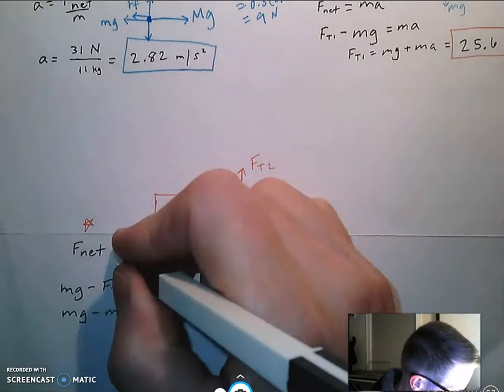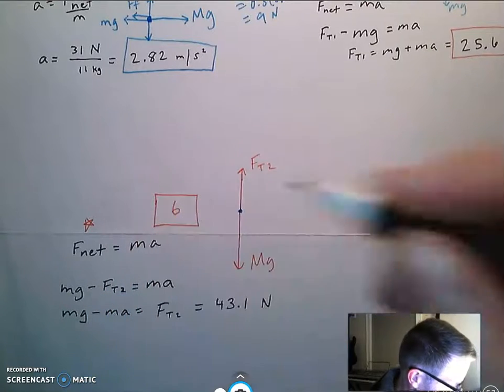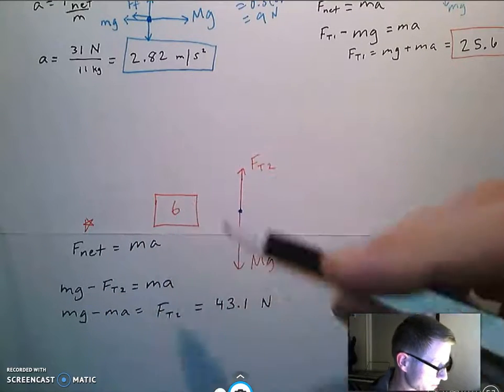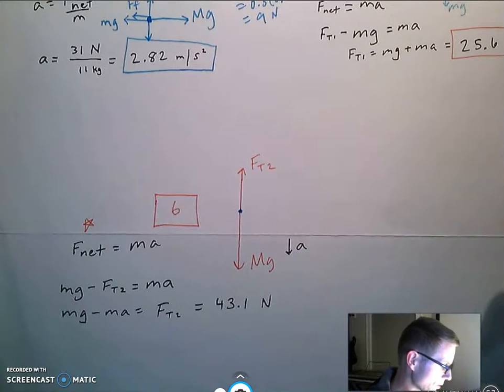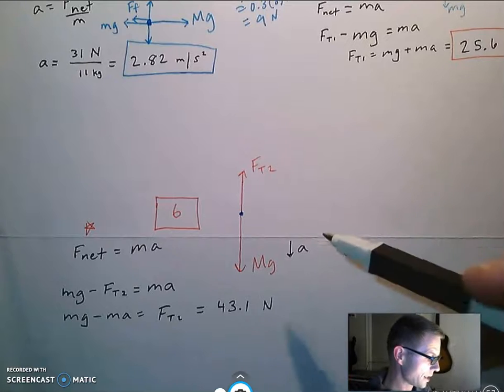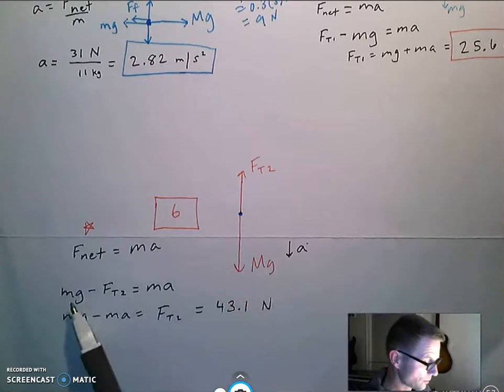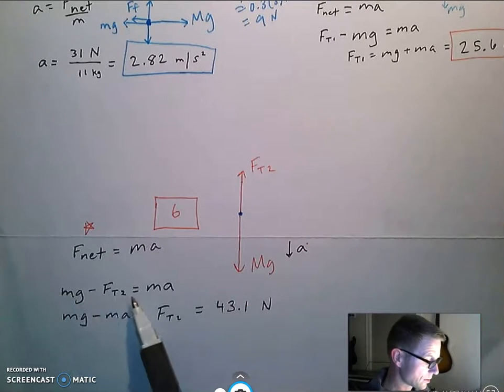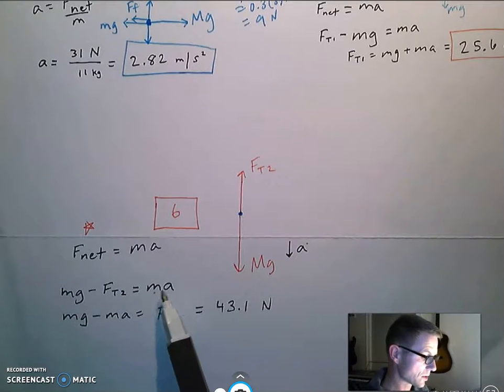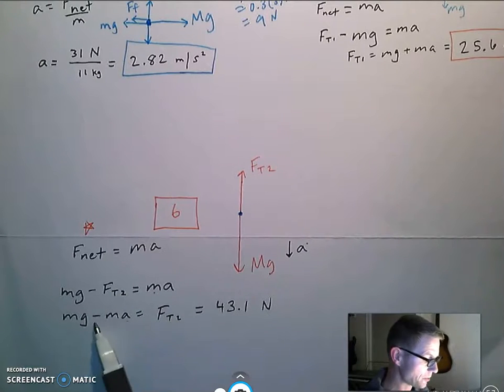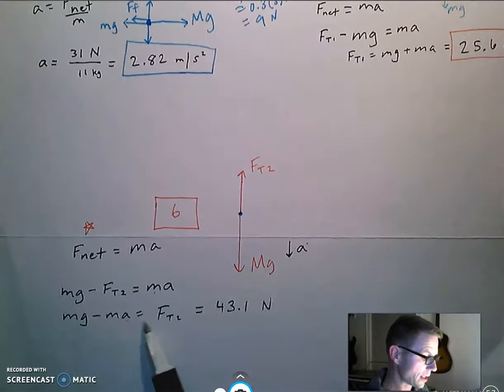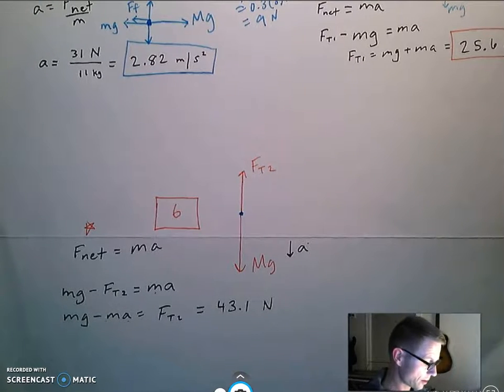The net force is ma. In this case that's 6 kilograms. Now I prefer to make the acceleration going in the direction of my bigger force, in this case it's downward, and I still know that's 2.82. So that mass is 6, that tension is unknown, that mass is 6, that a is 2.82. So if you do a little algebra you add ft to both sides, you subtract ma. So mg minus ma, 6 times 10 minus 6 times 2.82 is ft2, which is 43.1.